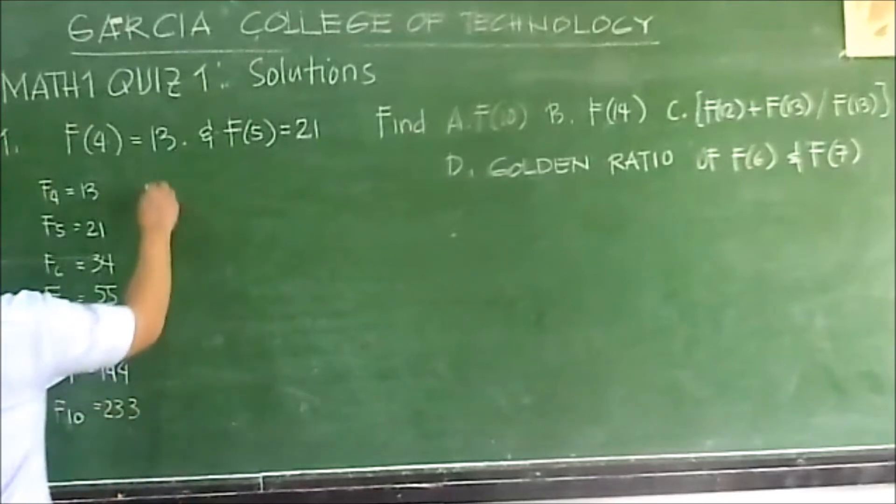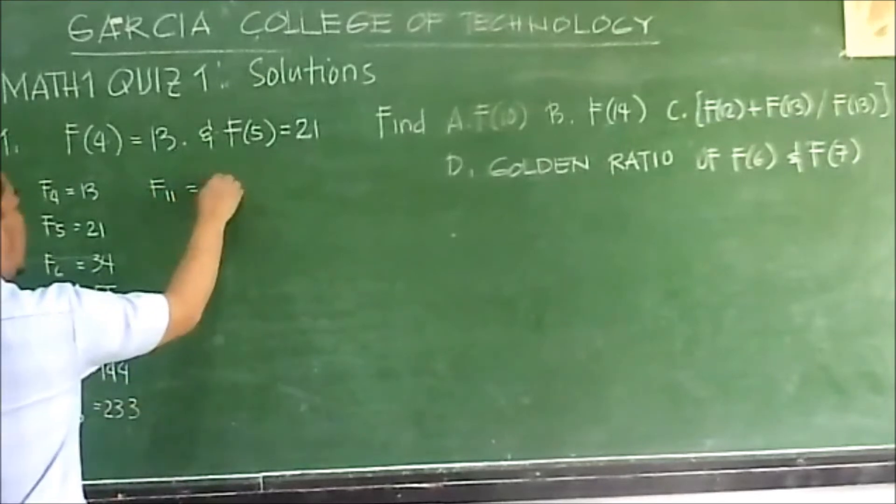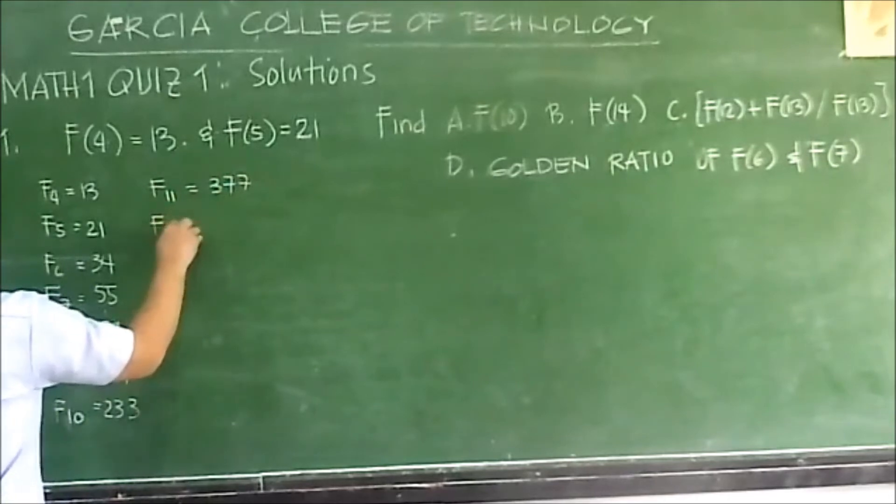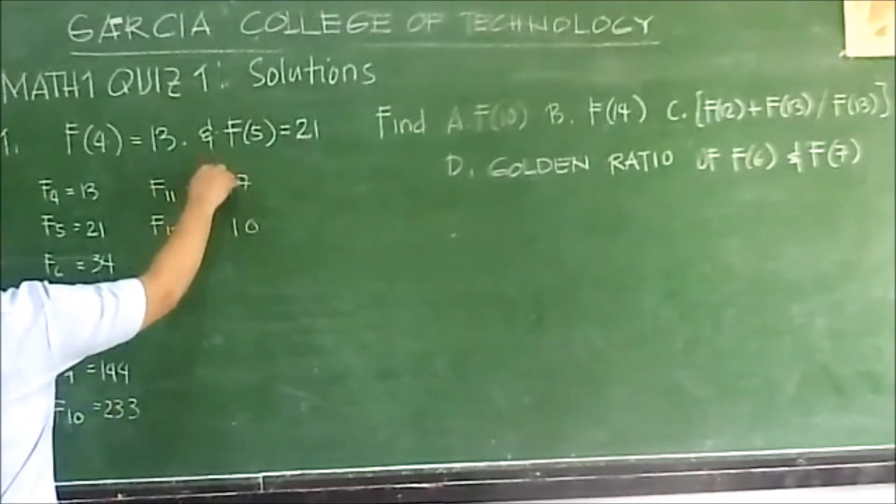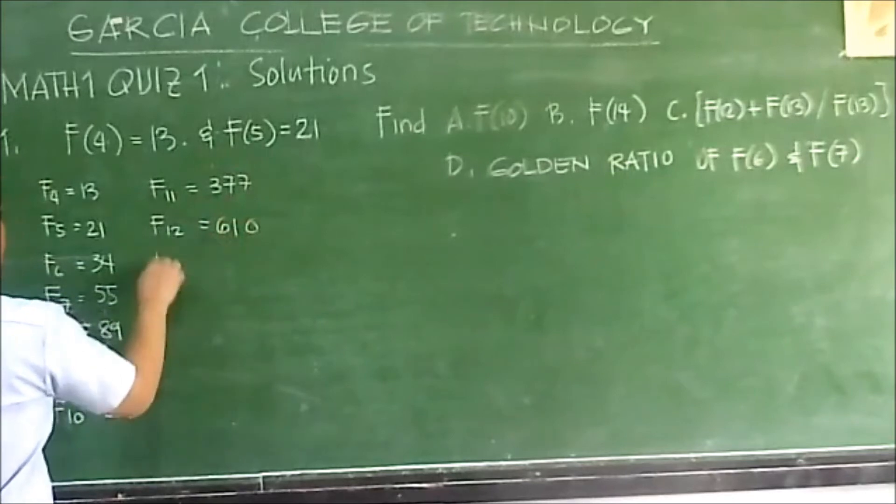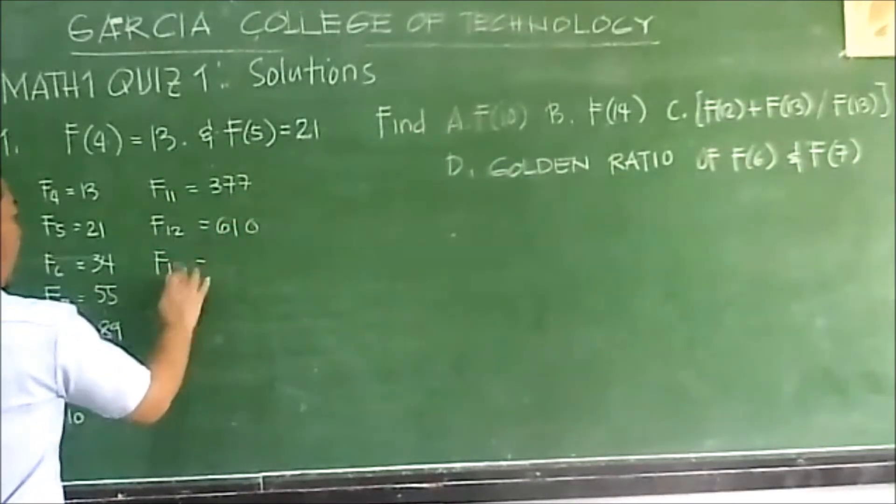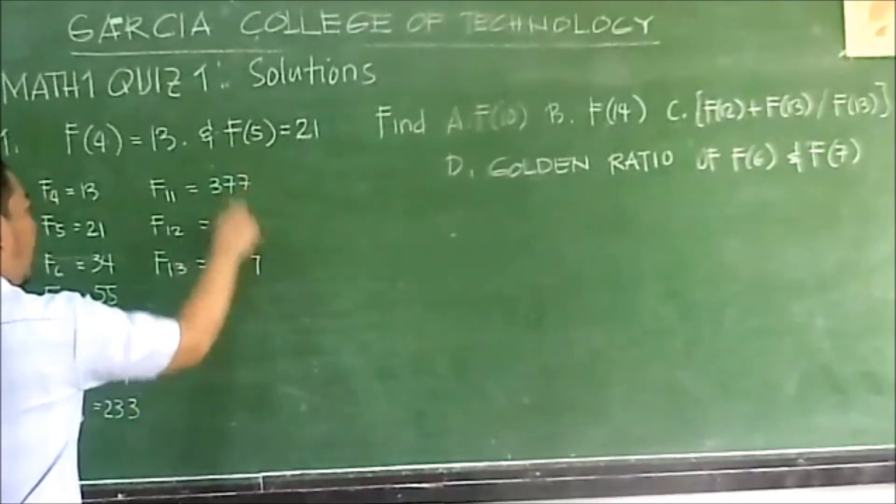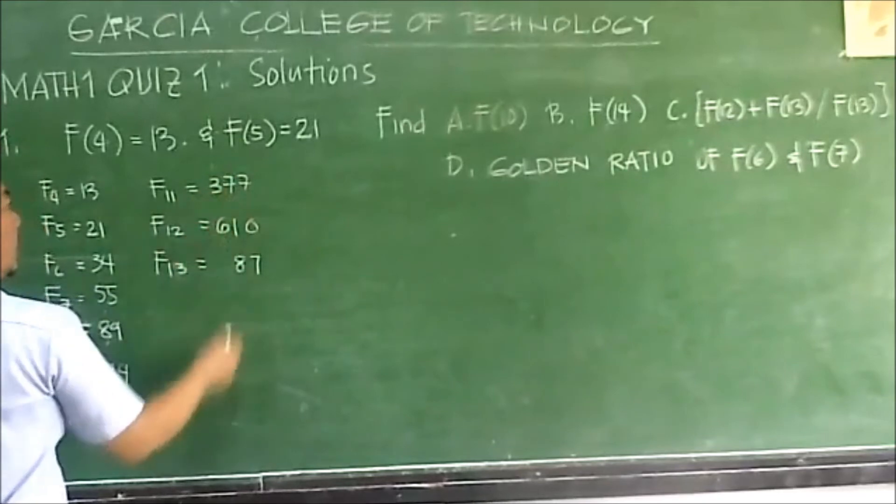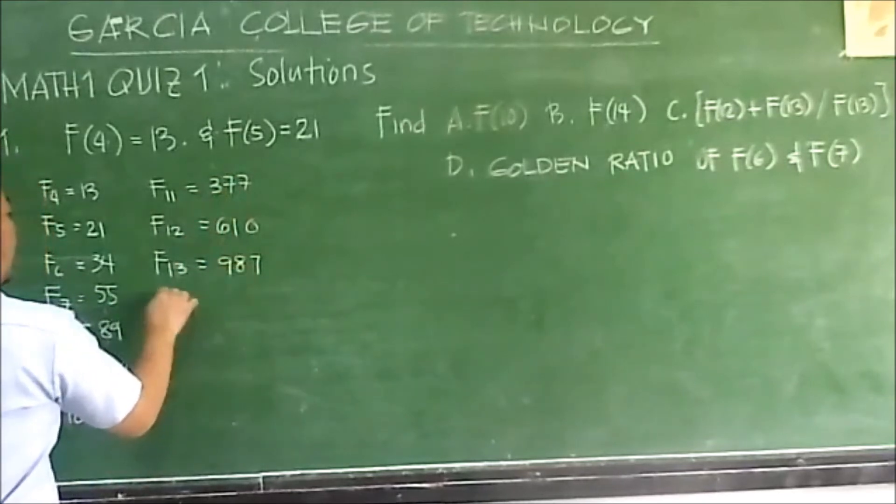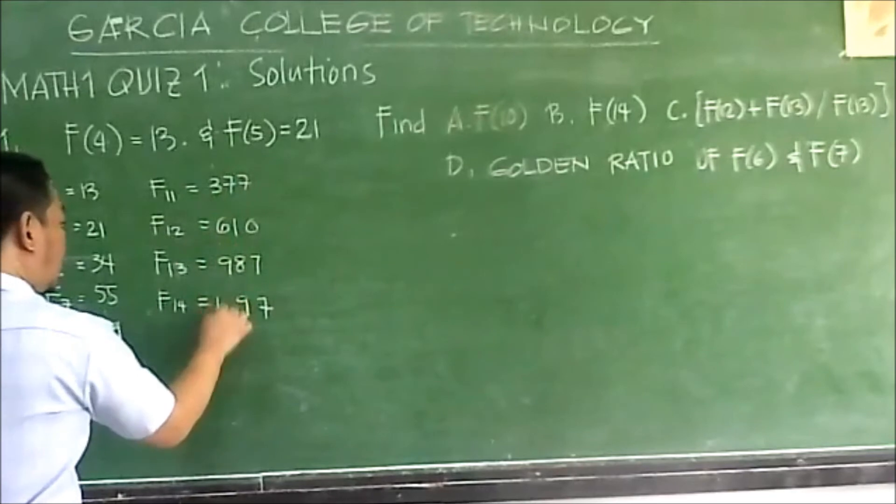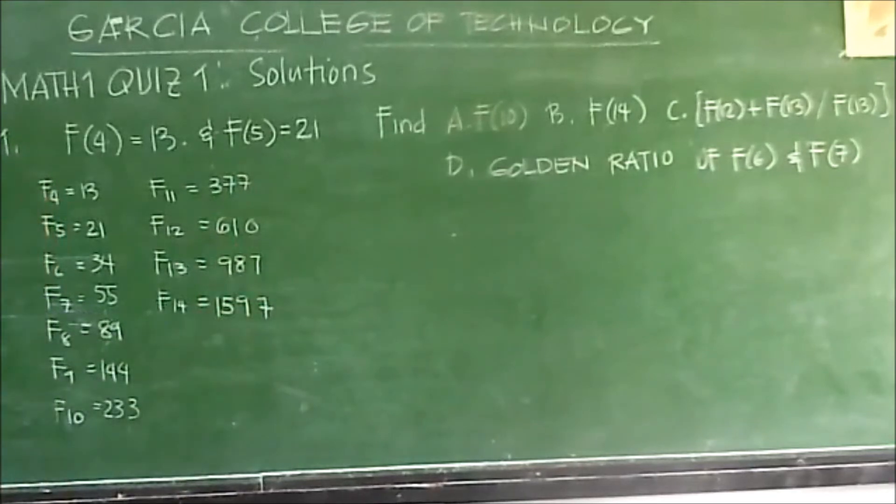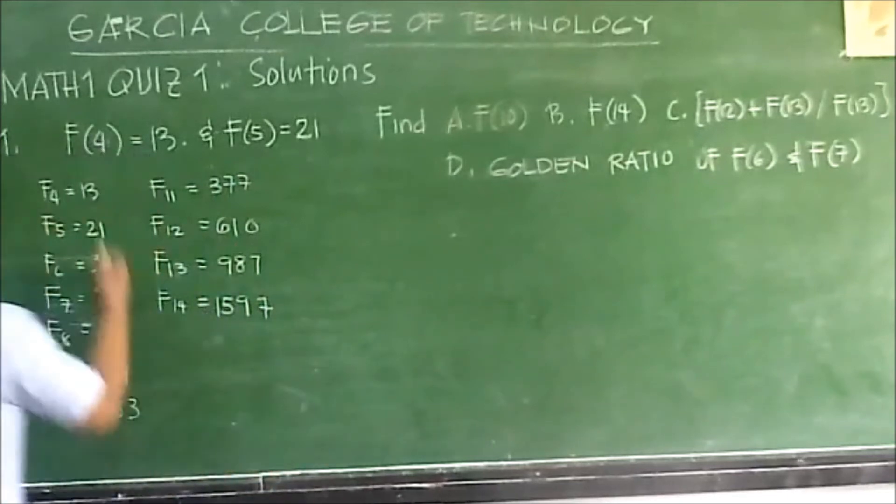The next F sub 11 is 377. F sub 12 is 610. F sub 13 is 987. F sub 14 is 1597. F sub 15 is 1519.